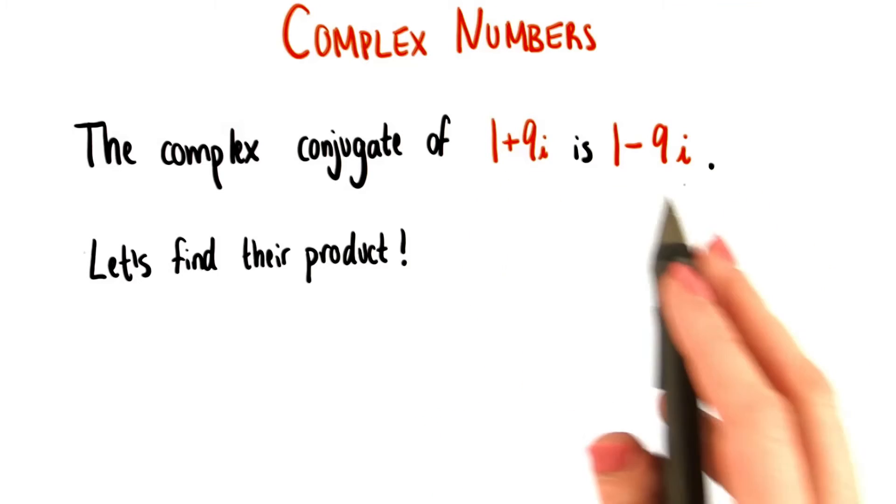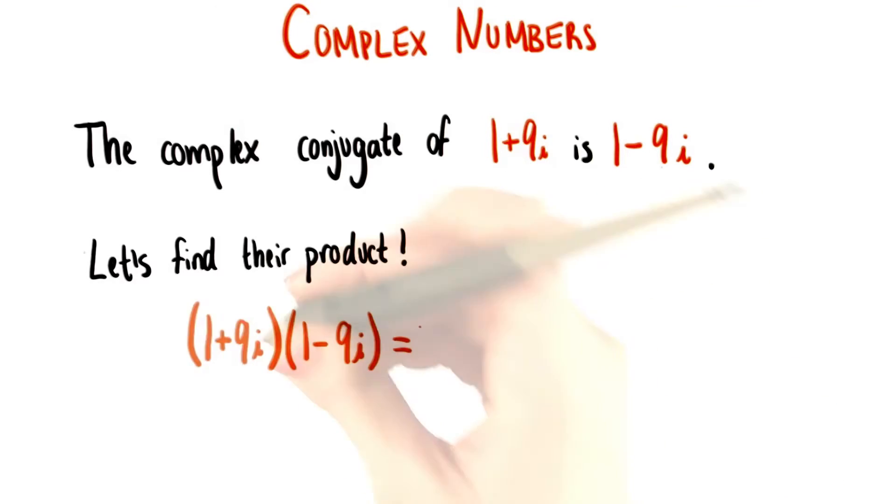The complex conjugate of 1 plus 9i is just 1 minus 9i. Now let's find their product.